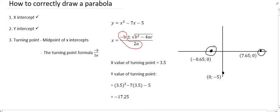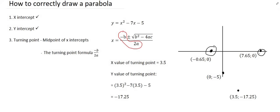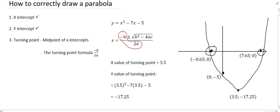If we know that the x-value of the turning point is 3.5, we simply plug 3.5 into the original equation to find the y-value of the turning point. And so there we have the y-value as minus 17.25. Now we can go locate those two coordinates on the diagram and draw the parabola.